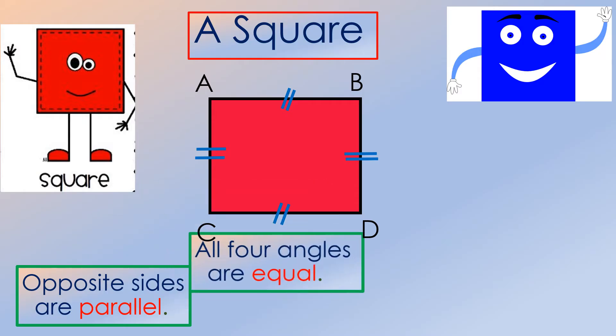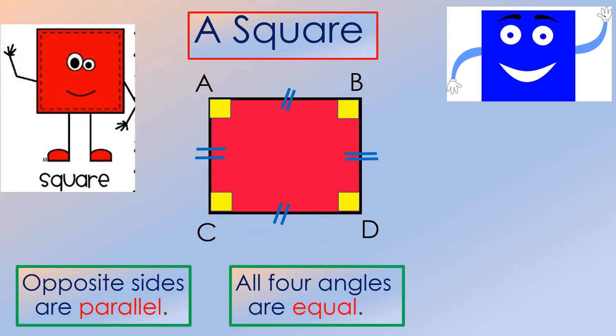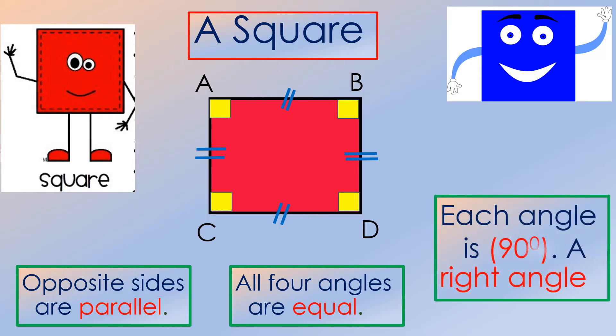All the four angles of a square are equal. They are all right angles, with a measurement of 90 degrees.